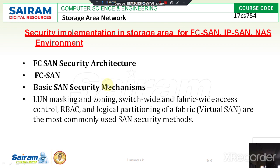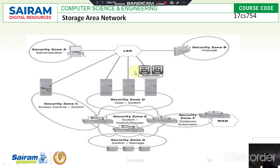Moving on to the Fiber Channel security architecture — the security architecture is made up of different security zones: zone A, B, C, D, E, F, and G. Each security zone takes care of its own responsibilities. For example, security zone A acts as the administrator.